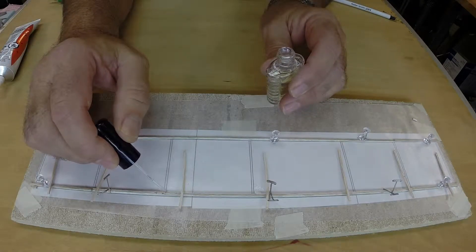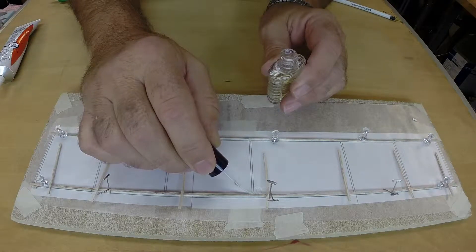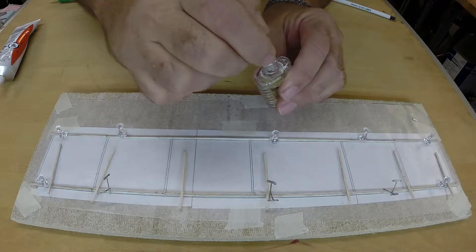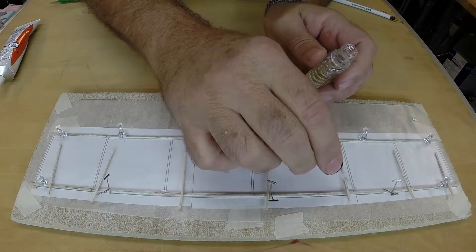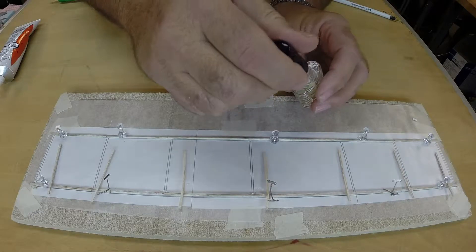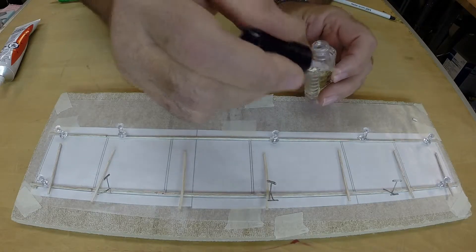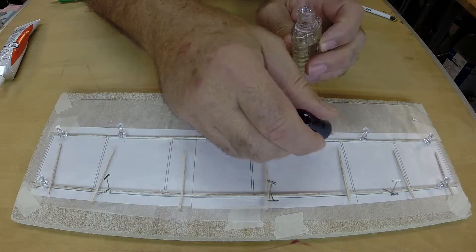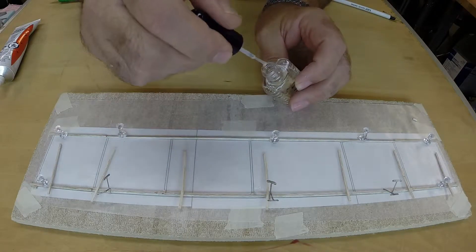Third, a process known as double gluing needs to be employed. This means that each surface to be glued will need a coating of the adhesive before they are glued together. The first application will need a couple of minutes to dry. Then the parts are glued together with a small amount of glue applied to each surface.